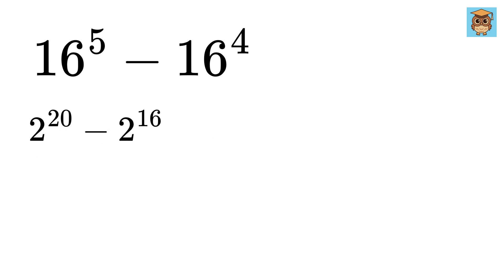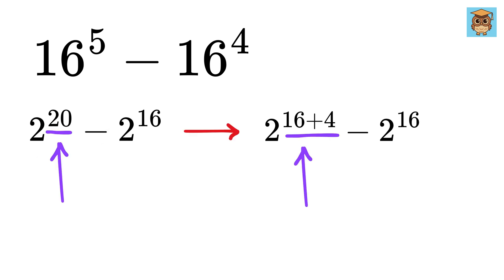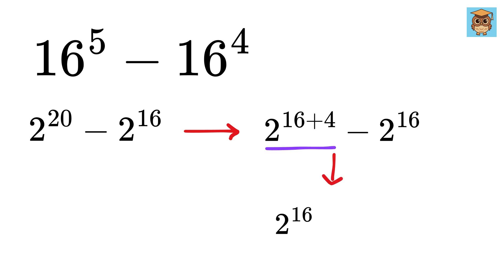Now, 20 can also be written as 16 plus 4. So it will become 2 raised to the power of 16, times 2 raised to the power of 4.